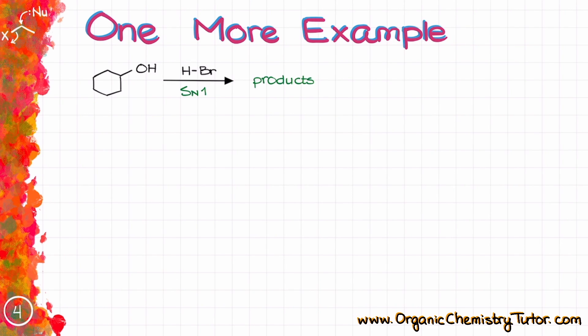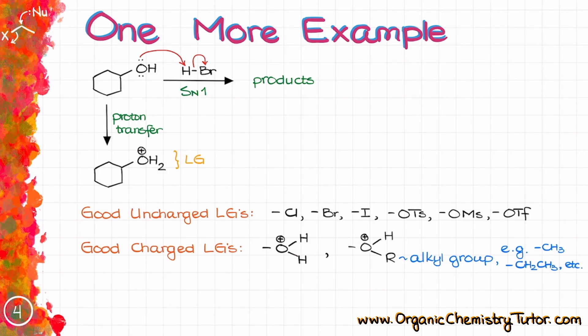Unlike in the last example, here, we do not have a good leaving group right away. However, we are working in acidic conditions because this HBr over here is a very powerful acid. So let's do our acid-base chemistry first and see what happens. By protonating the OH, we actually do form a good leaving group, H2O.